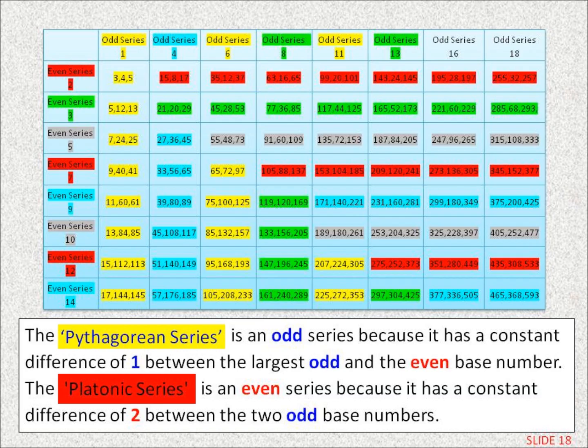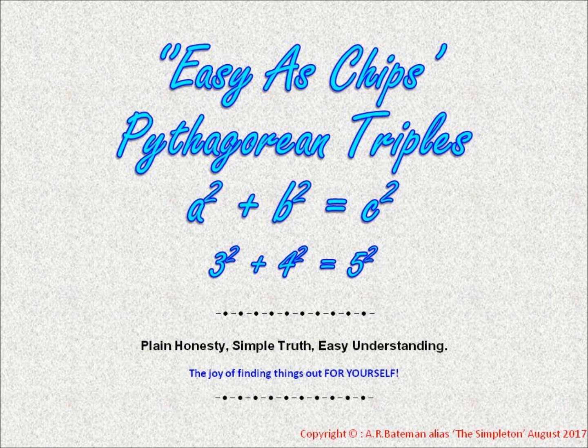For anyone who is not aware of the odd and even Pythagorean series, the start of them is given in the following table, which shows that they are just two sides of the same coin being embedded at right angles to each other, so that generation of one series automatically results in the other series. The table is from my video, Easiest Chips, Pythagorean Triples.